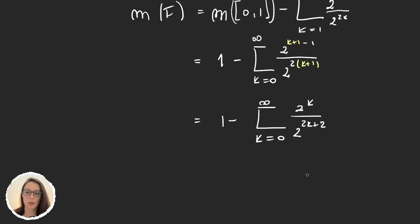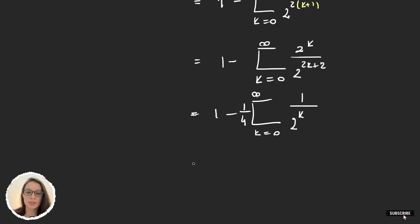And we can actually take this 2² outside, so it will be 1/4. And now we have a geometric series. So we can calculate: this is 1 - 1/4 times... And the sum of the geometric series was 1/(1 - r), and the ratio in this case is 1/2.